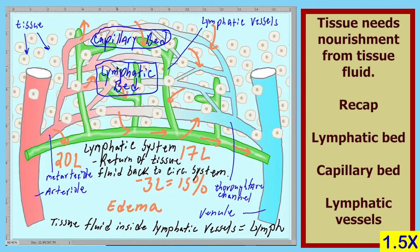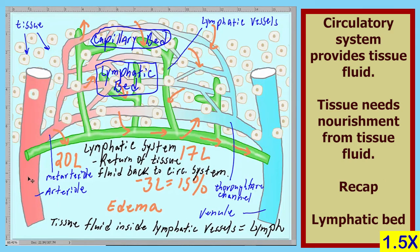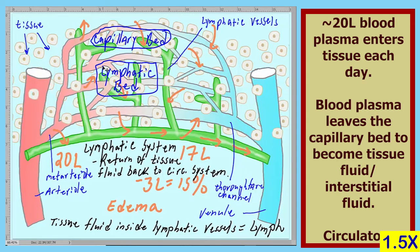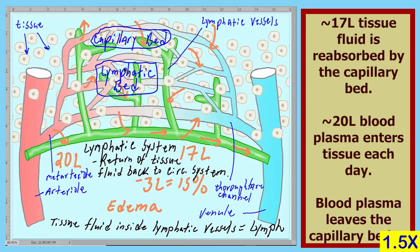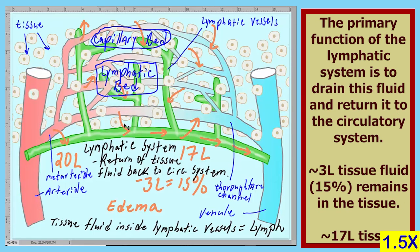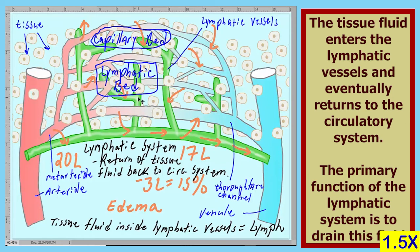Just to recap: we have tissue that needs to be nourished with tissue fluid provided by the circulatory system. Blood travels into the capillary bed, and the blood plasma leaves the capillary bed and enters the tissue — at this point it is known as tissue fluid, or interstitial fluid. Approximately 20 liters of blood plasma enters the tissues every day, and about 17 liters is returned to the circulatory system. This leaves about 3 liters, or about 15%, remaining in the tissue. If this were to remain, we would have a condition known as edema, or the tissue would become edematous. To correct this problem, we have the lymphatic system. The remaining 3 liters enters the lymphatic vessels, which eventually make their way back to the circulatory system, returning all of this fluid. This is the primary function of the lymphatic system.